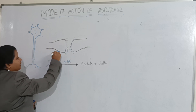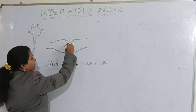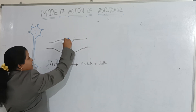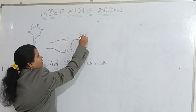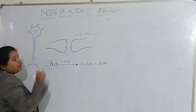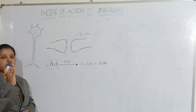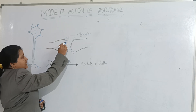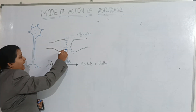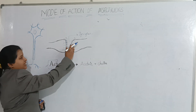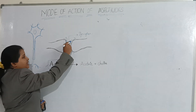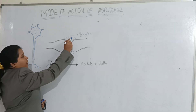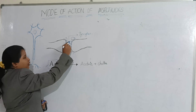Here you can see this is one neuron and this is the other neuron, and there is a gap between them. This gap between two neurons is called the synapse. The message is conveyed from one neuron to the other because this neuron releases acetylcholine messengers, and the adjacent neuron has receptor sites for this acetylcholine to bind.